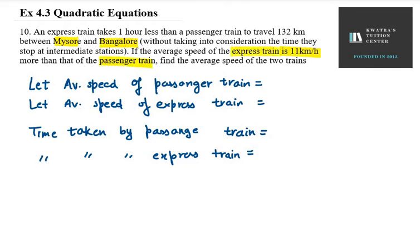So the express train is 11 km/h more than the passenger train. Let the average speed of the passenger train be x km per hour. Then the express train speed is x plus 11 km per hour. The distance to travel is 132 km.